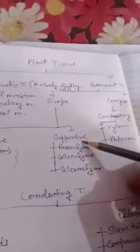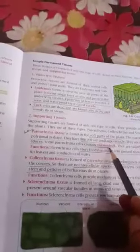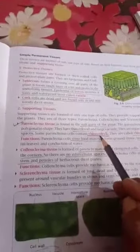The supportive tissues are parenchyma, collenchyma, and sclerenchyma. Parenchyma cells have oval or round-shaped structures with thin cell walls and vacuoles. Sometimes parenchyma cells contain chlorophyll; at that time they are called chlorenchyma, as in the case of leaves. The function of parenchyma cells is to store food material in ground tissue.